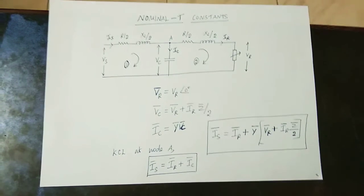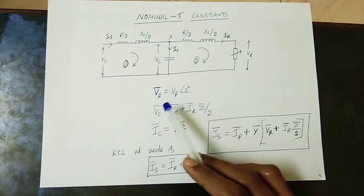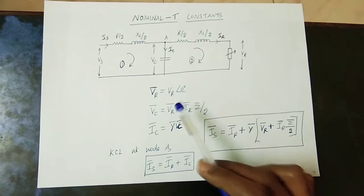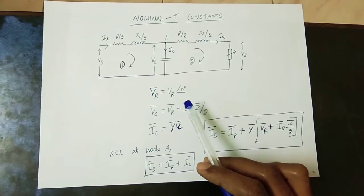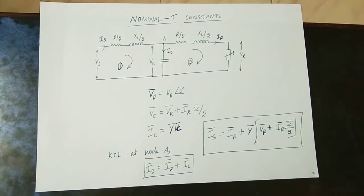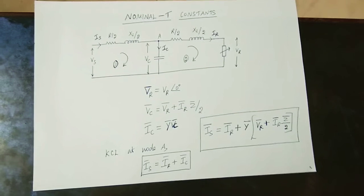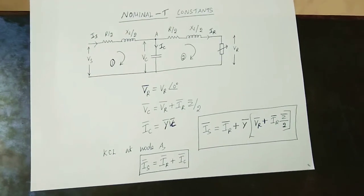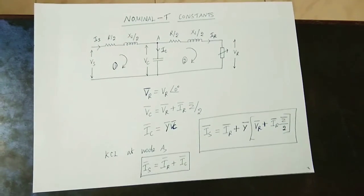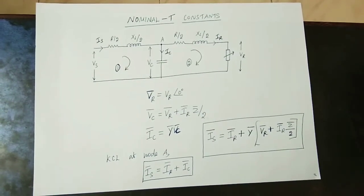What we will do now? First, we will see the Receiving End Voltage. Receiving End Voltage Vr is equal to Vr at angle 0. What does angle 0 mean? It means the phase difference between voltage and current. In electrical engineering, for any circuit analysis, we use voltage as the reference — so the phase angle is 0.